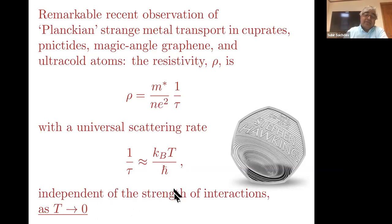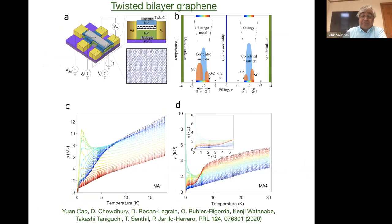It's quite remarkable that there's so many systems in which this one over tau, which normally you would think depends on some kind of electron-electron interaction strengths, seems to be entirely independent of it. So quickly I'll just show you some of the data.